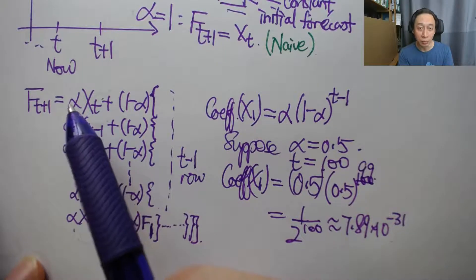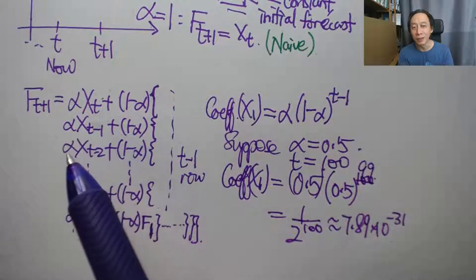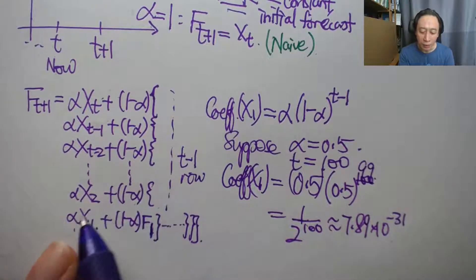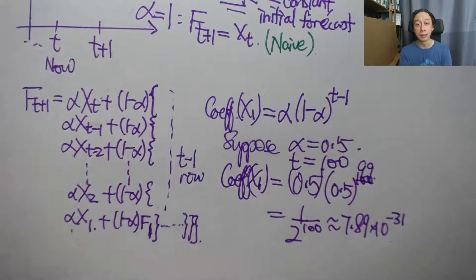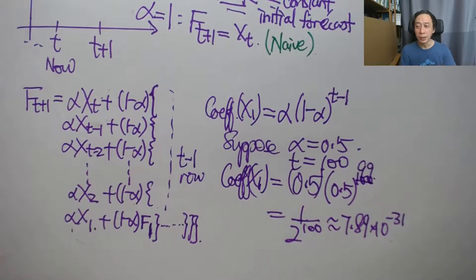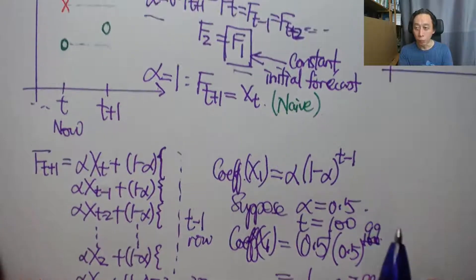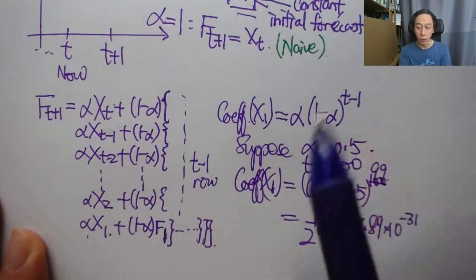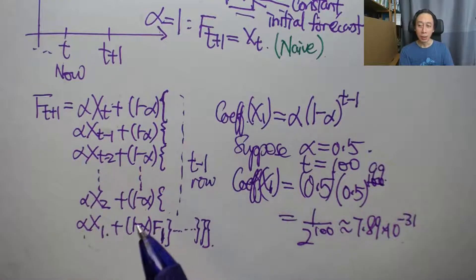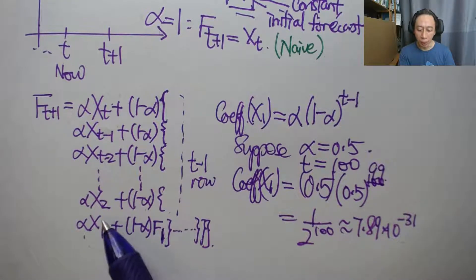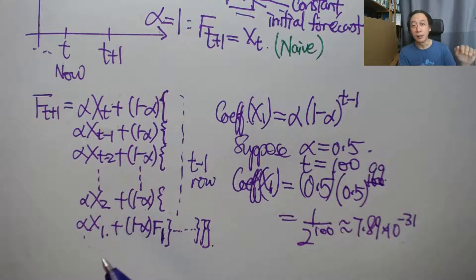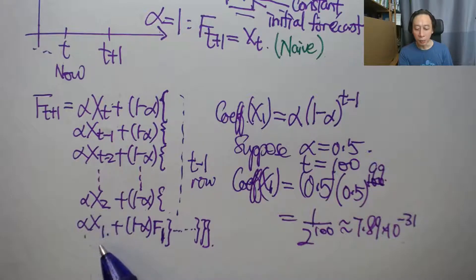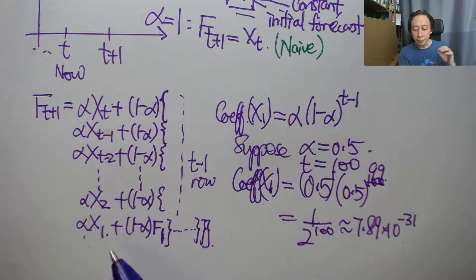But as time passes, it becomes fainter and fainter because of the automatic multiplication by 1 minus alpha as time passes. So all these multiplications and everything and adjustment of the coefficients, they are embedded in the formulation. So when we run computer software, we just do this very efficiently, but the mathematical thinking behind is doing everything here. And so it becomes the case when past data dies off like an echo. So it says x1, suppose x1 is 100.